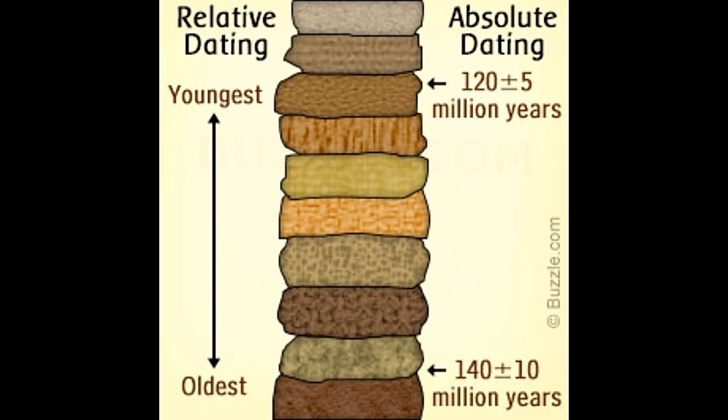Our planet inherits a large number of artifacts and monuments bestowed upon us by older historic civilizations. These remains are subjected to dating techniques in order to predict their ages and trace their history. This post enlists the differences between the absolute and relative dating methods. Although both relative and absolute dating methods are used to estimate the age of historical remains, the results produced by both these techniques for the same sample may be ambiguous.